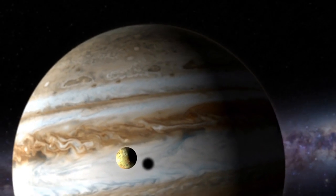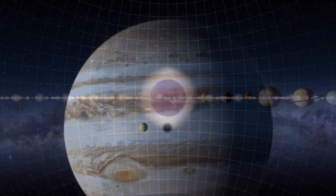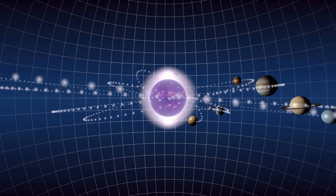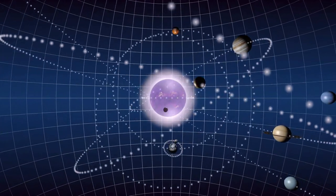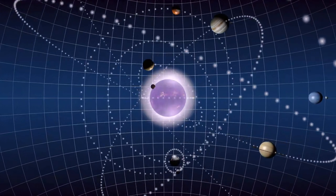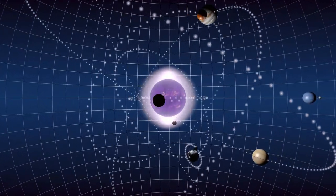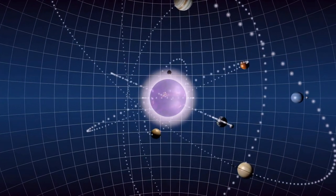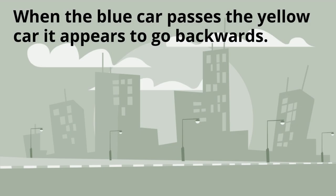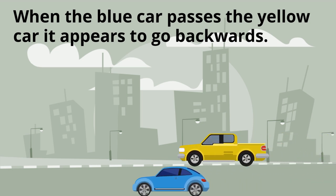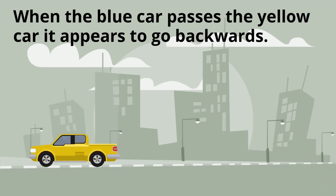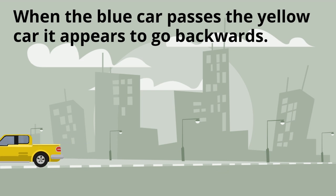Johannes Kepler proposed that the orbits of the planets were not perfect circles, but ellipses. Our planets travel in an ellipse and actually speed up when closer to the Sun and slow down when further away. The retrograde motion of the planets was explained because it is caused by planets that move more quickly past other planets, making it appear that a planet is going backwards.